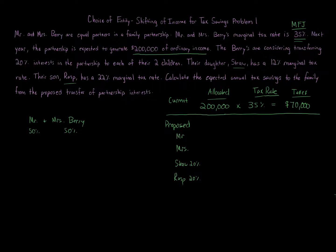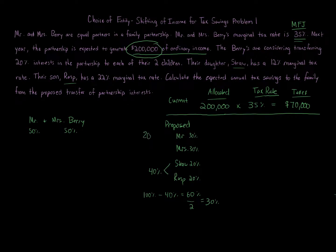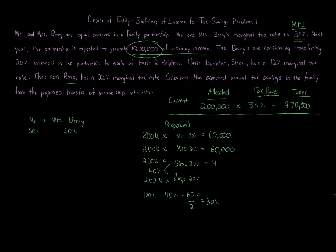So Straw gets 20% and Rasp gets 20% — that's 40% total going to the children. That leaves 60% for Mr. and Mrs. Berry, divided equally, so each parent owns 30%. Applying those percentages to the $200,000 of ordinary income: Mr. Berry gets $60,000 allocated, Mrs. Berry gets $60,000, Straw gets $40,000, and Rasp gets $40,000.